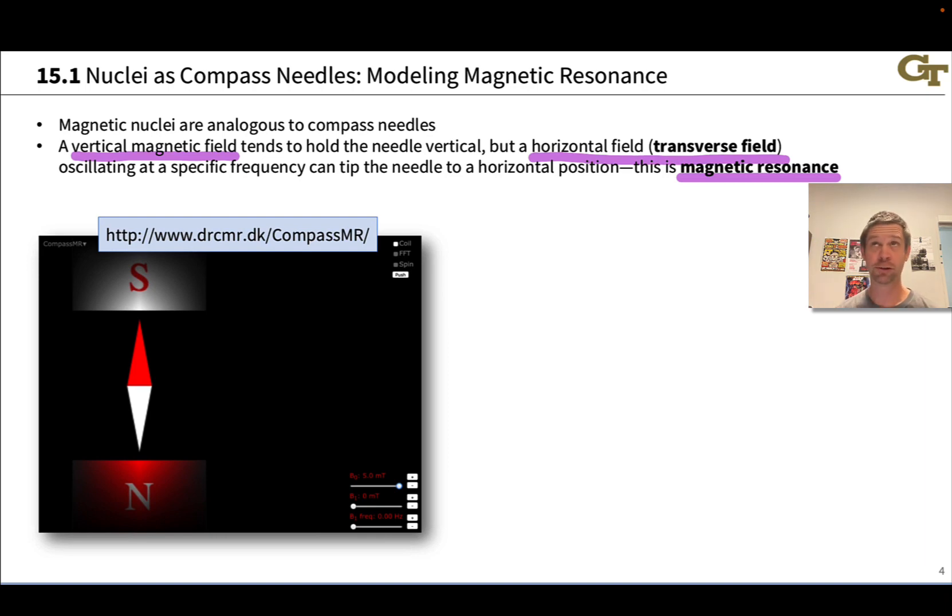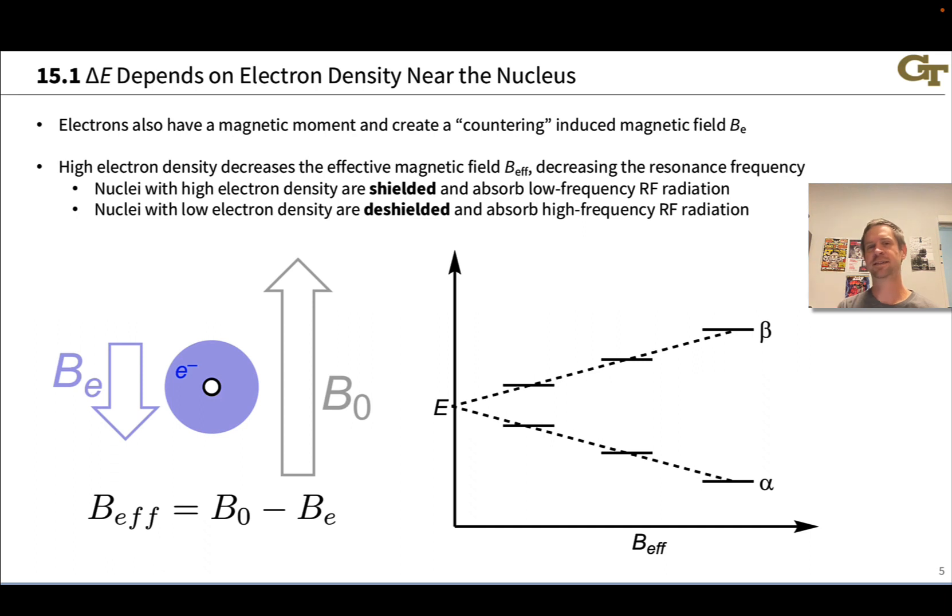If all nuclei were exactly the same, if all protons were exactly the same, then proton NMR wouldn't tell us much because every hydrogen in a sample would have the same frequency and we'd just get one big peak somewhere in the middle of the NMR spectrum.